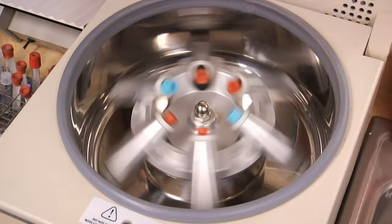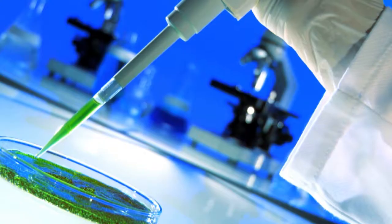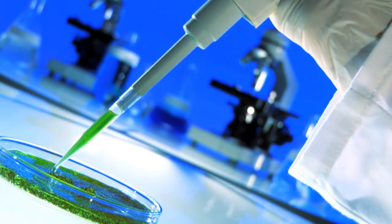Laboratory technicians then separate the stem and fat cells by using a centrifuge system. From here, the stem cells are placed in a petri dish and given food they need to grow.